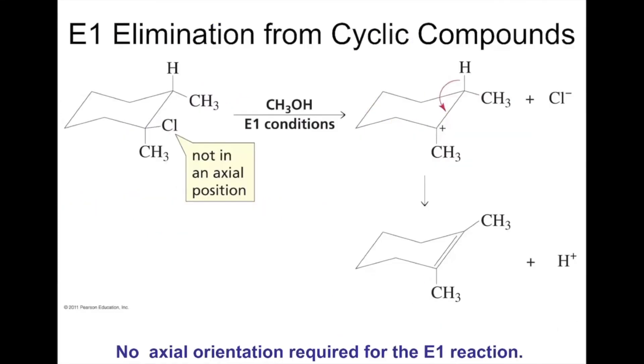We can, however, do E1 in that situation. The chlorine can be equatorial and leave to form a carbocation. By the E1 mechanism, we can form a double bond where we couldn't with E2 because it lacked the anti-periplanar conformation. There you have it—anti-periplanar for the E2 mechanism of elimination.